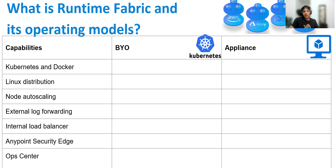So let's see how runtime fabric works. It is basically a clustered container service, and it is completely hosted by the customer. Runtime fabric runs on customer-hosted infrastructure. It can work on AWS, Azure, Google virtual machines, or even bare metal servers.